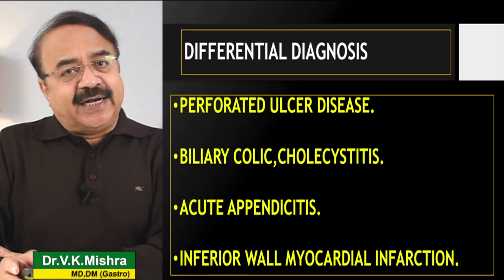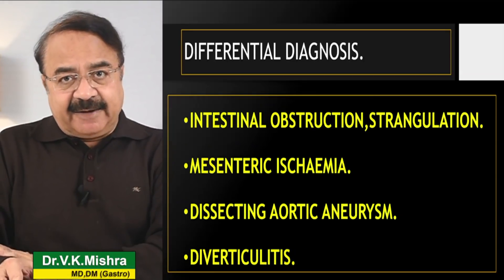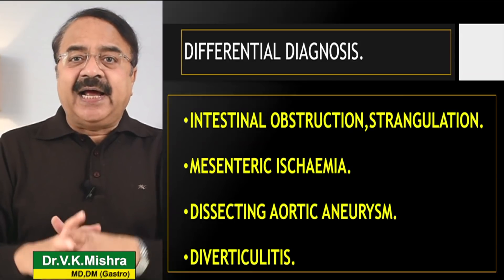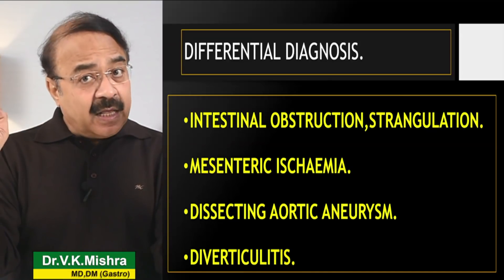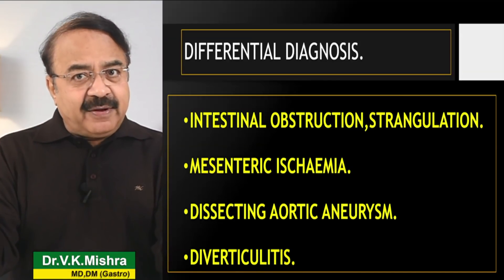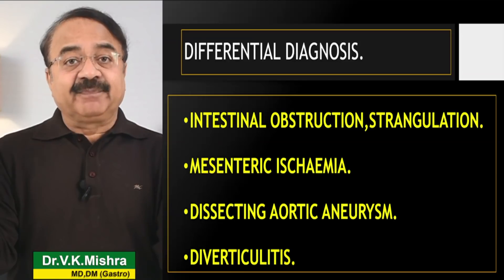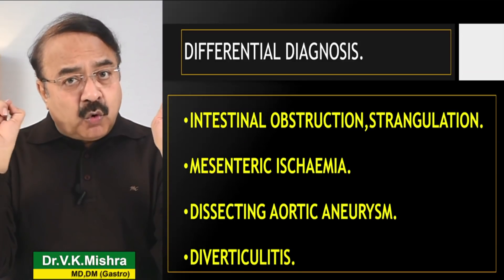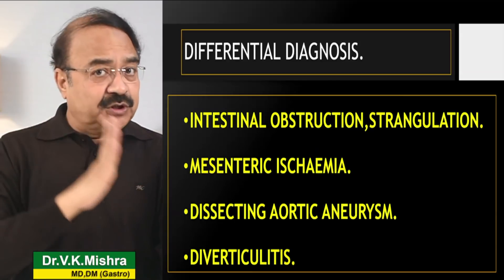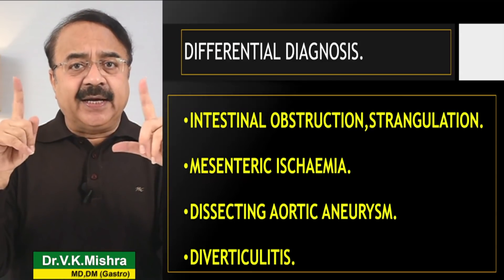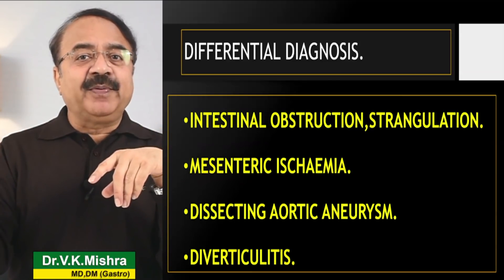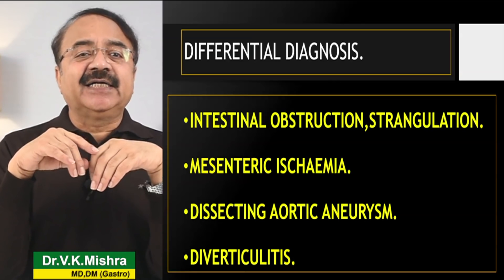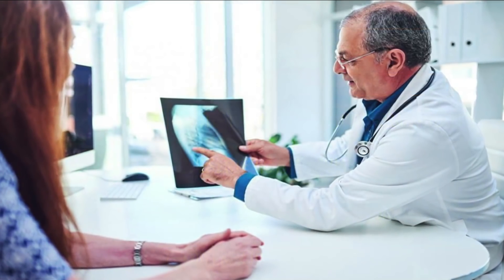सबसे ज़्यादा जो dreaded complication है — कभी-कभी अगर heart की inferior wall में attack आया, that is known as inferior wall myocardial ischemia या infarction, तो उसका attack almost pancreatitis जैसा आ सकता है. इसके अलावा intestinal obstruction जो strangulation के चलते होता है, उसमें भी pancreatitis जैसे features आने लगते हैं.